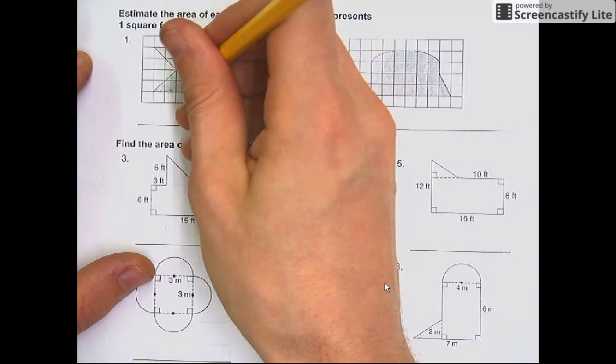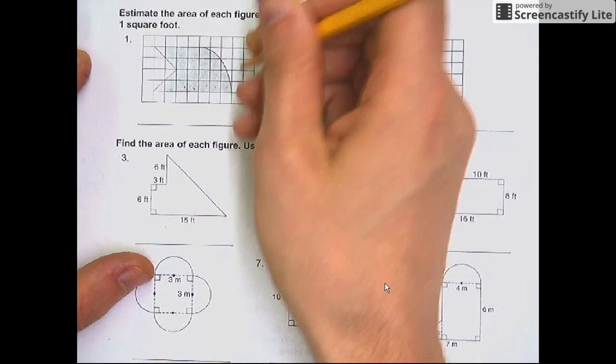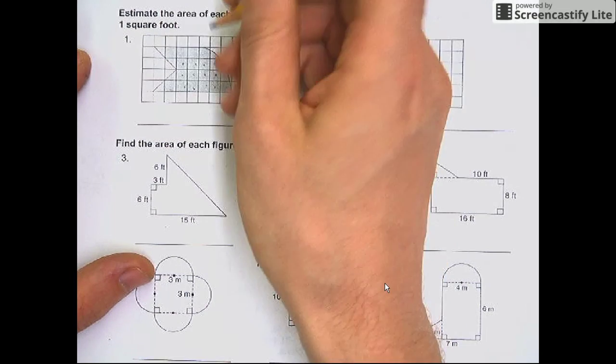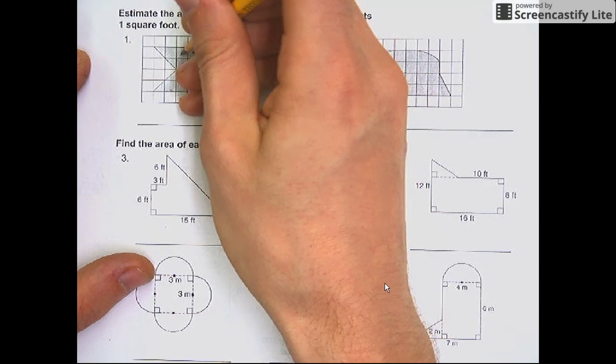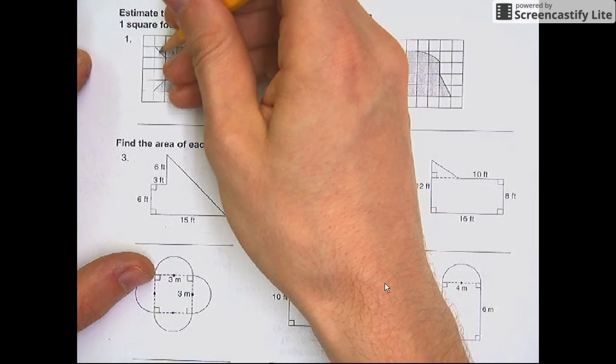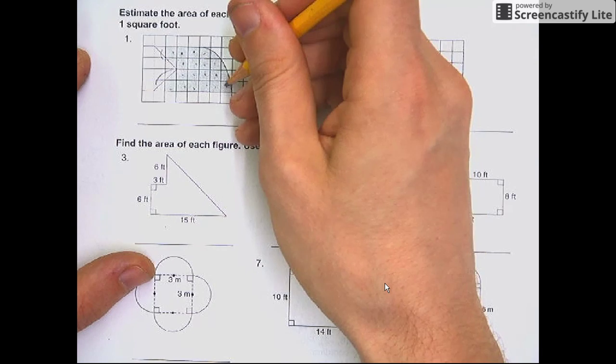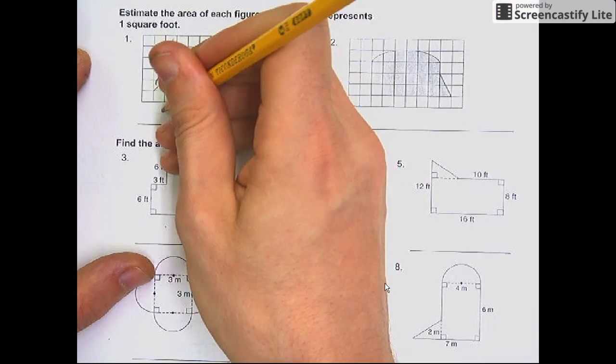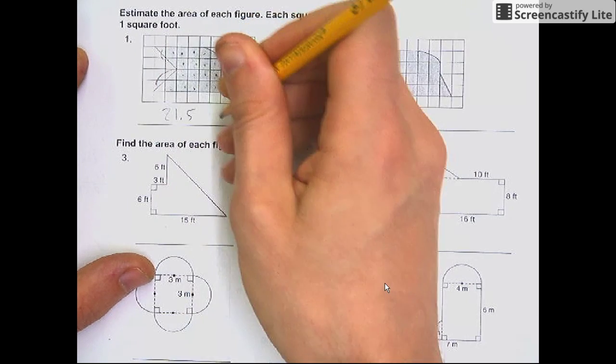1, 2, 3, 4, 5, 6, 7, 8, 9, 10, 11, 12, 13, 14, 15, 16, 17, 18. These two make 19, 20, 21. About 21, maybe 21 and a half square feet.